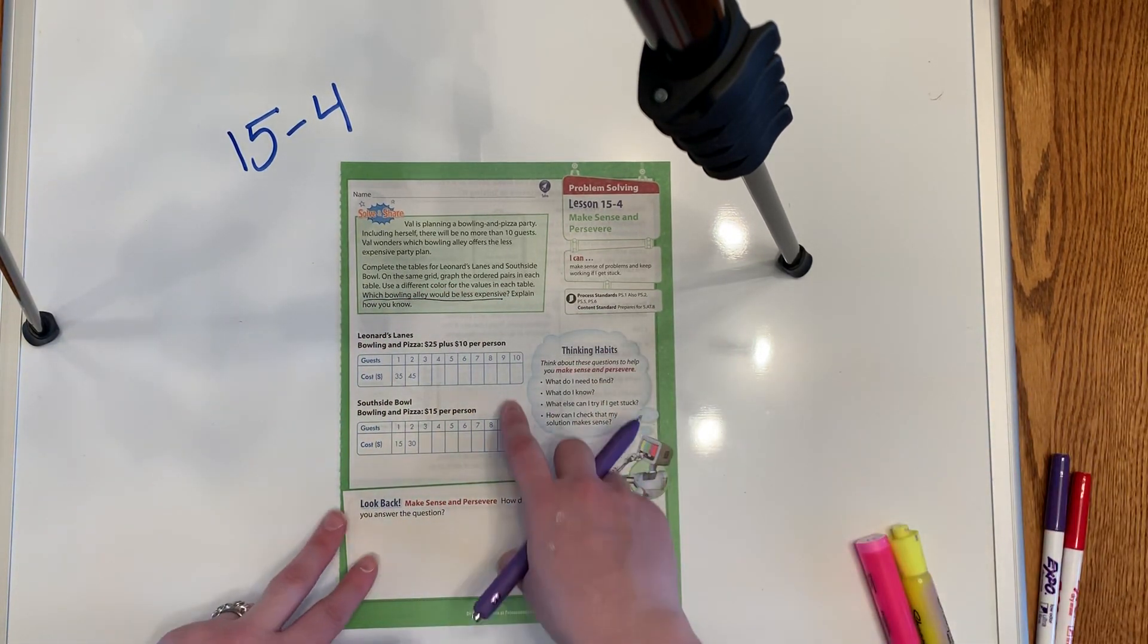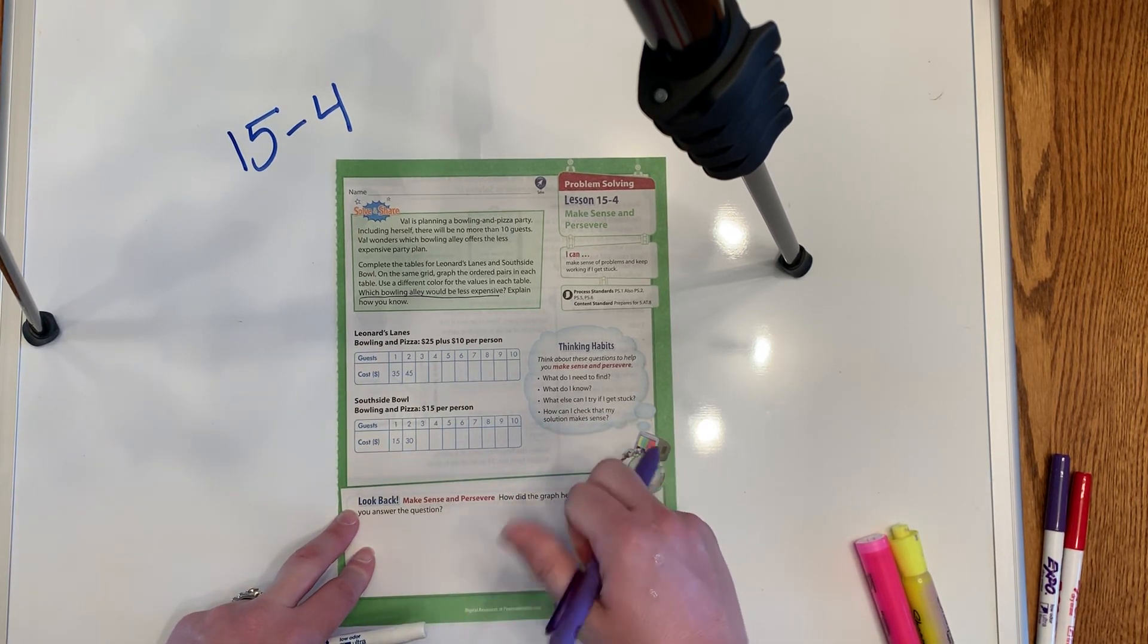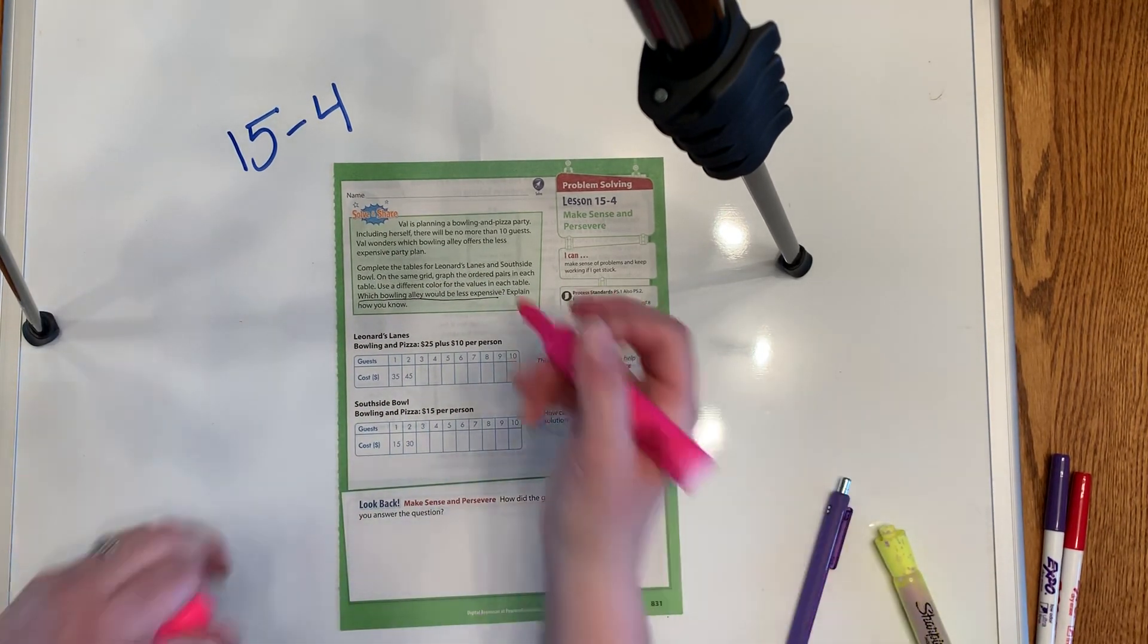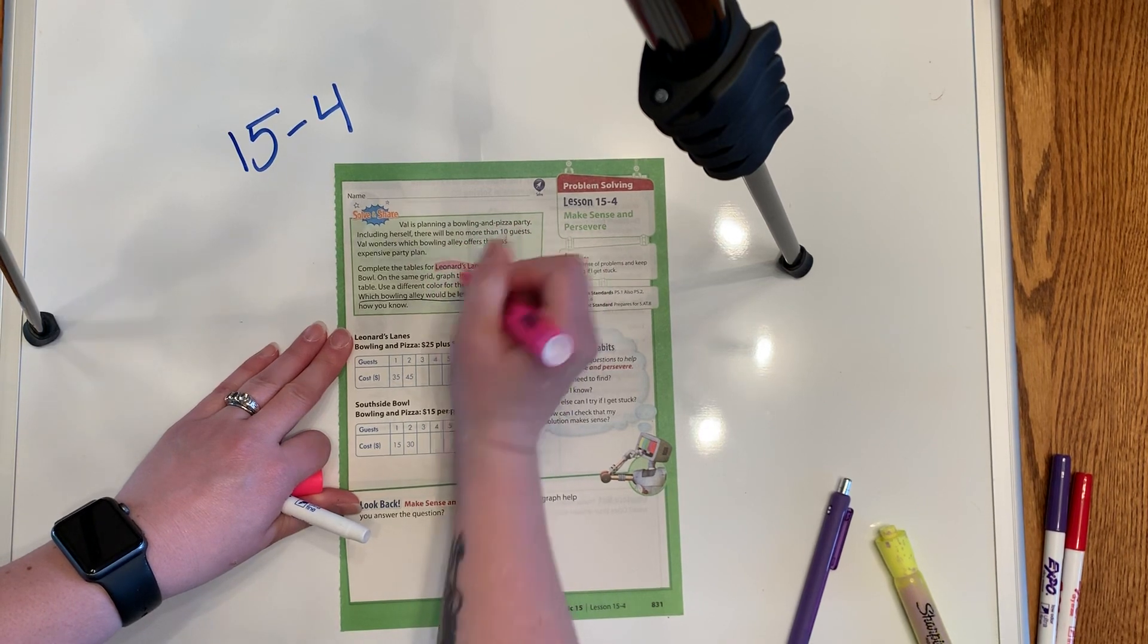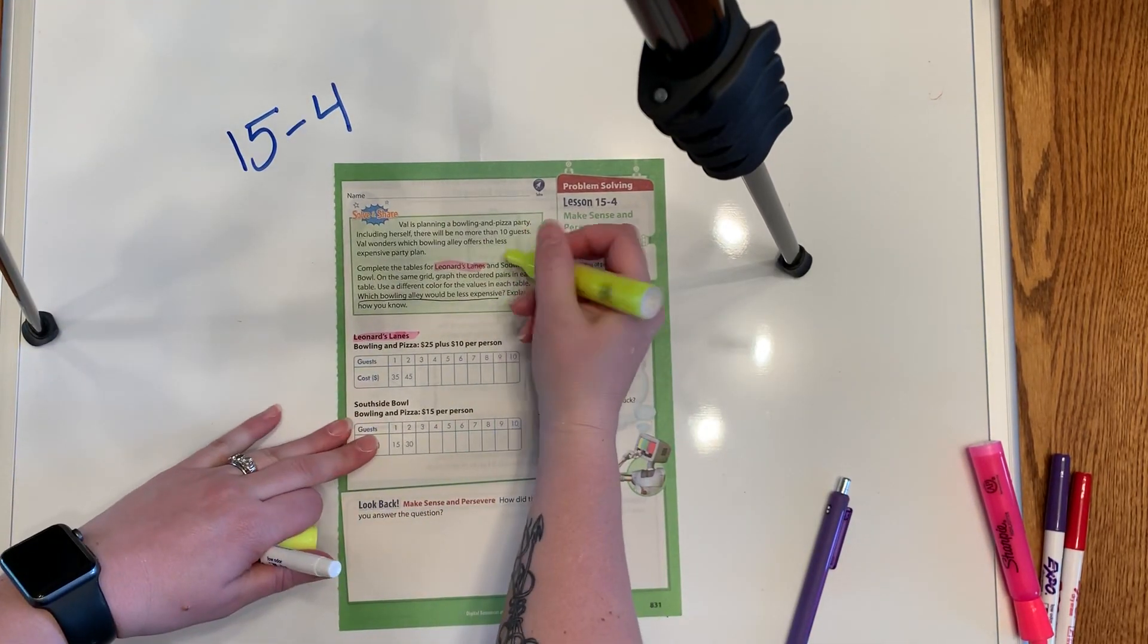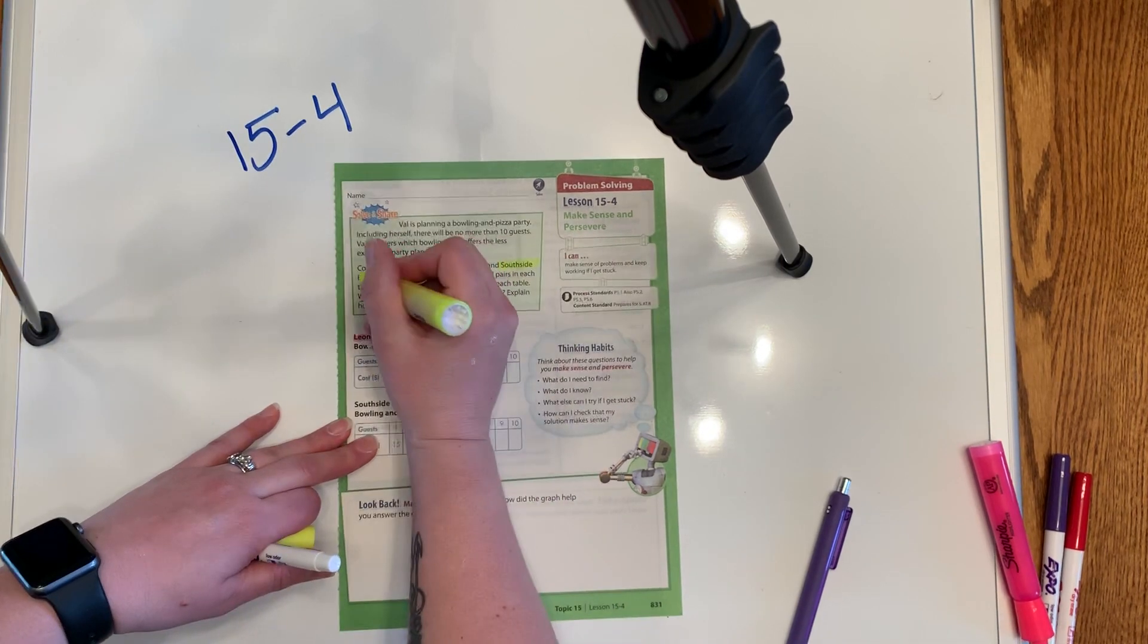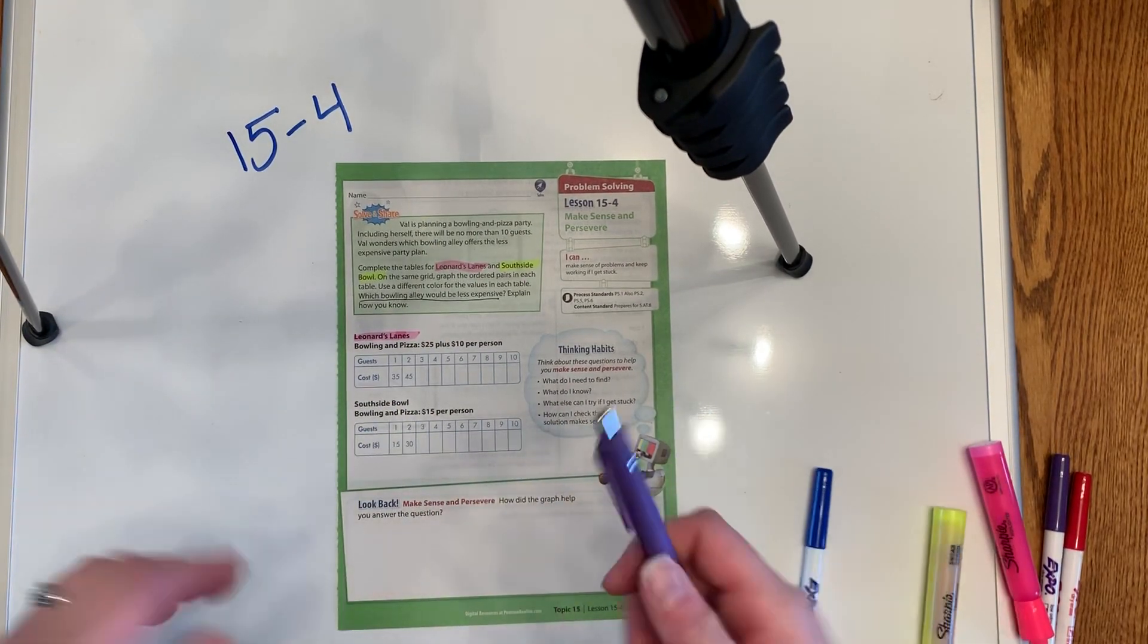Now we could make a graph with this, but we're just going to compare these two because I think that's actually more practical. It says, complete the tables for Leonard's Lanes. We're going to do Leonard's Lanes in pink. So Leonard's Lanes is going to be in pink. And then South Side Bowl is going to be in yellow. And then it wants us to compare the different amounts that it's going to cost.